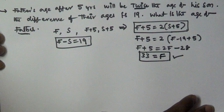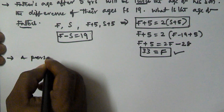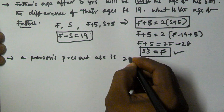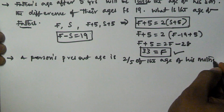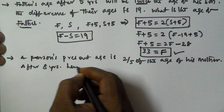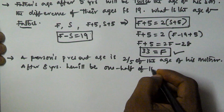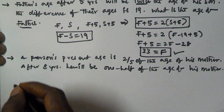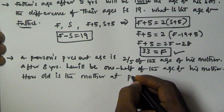I hope you got this one. Let's see another problem. If a person's present age is 2 by 5 of the age of his mother, and after 8 years he will be one half of the age of his mother, how old is the mother?